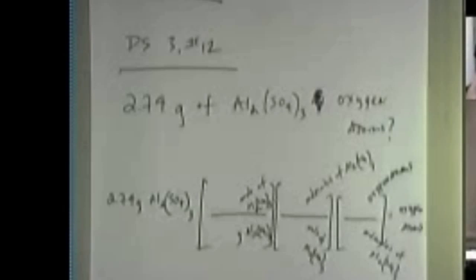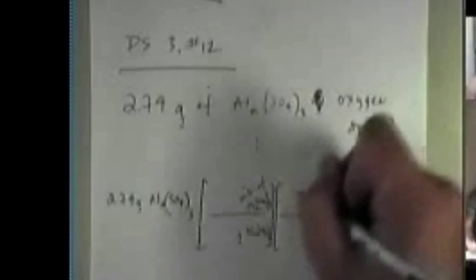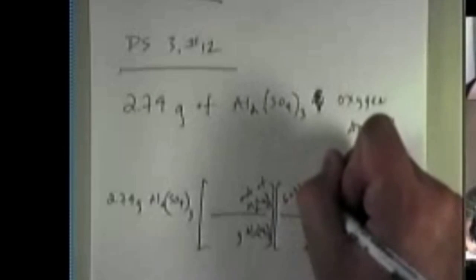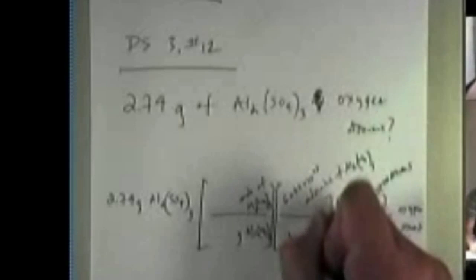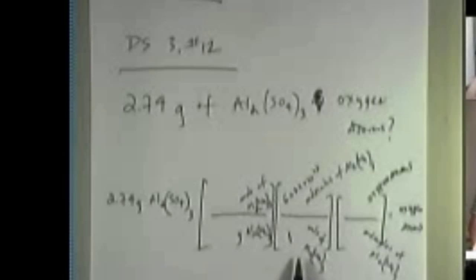Moles of aluminum sulfate, how many molecules are there of it? Avogadro's number, 6.022 times 10 to the 23rd in one mole. So let's stop and ask ourselves, does that make sense? If I had one mole of aluminum sulfate, do I indeed have 6.022 times 10 to the 23rd molecules of aluminum sulfate? So that is a true statement.